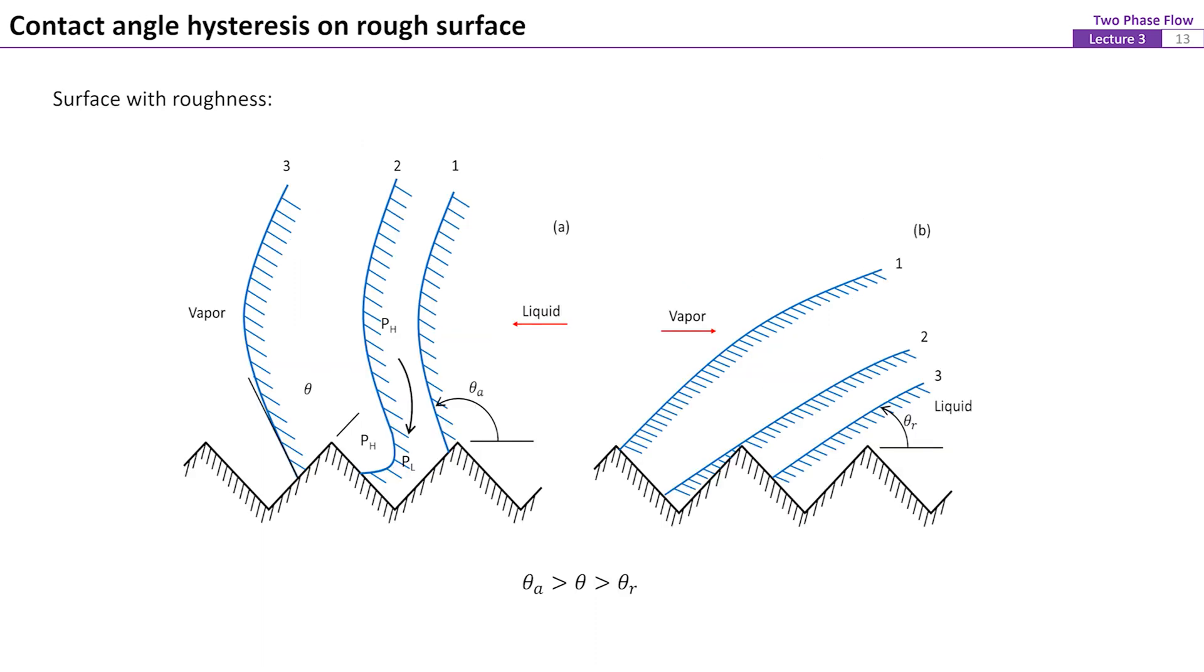The contact angle hysteresis could also be resulted from the surface roughness of the solid. On these two figures shown here, the solid surface and liquid combination has an intrinsic contact angle theta. However, when the contact line is advancing and moving on the descending portion of the surface, the apparent contact angle thetaA is greater than theta. The contact line moves rapidly on the portion of the surface with an upwards slope.